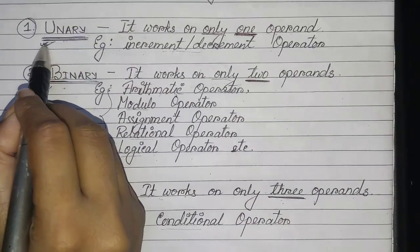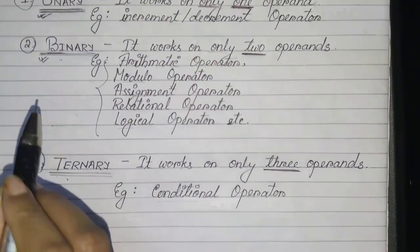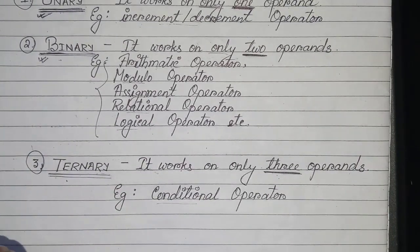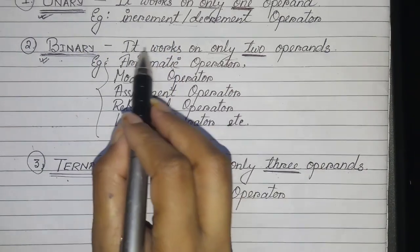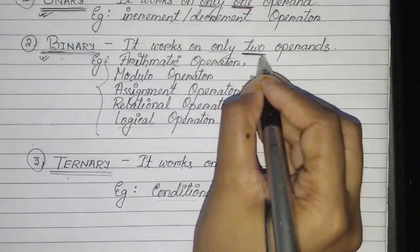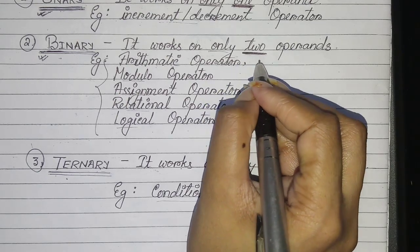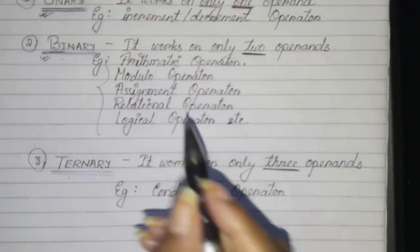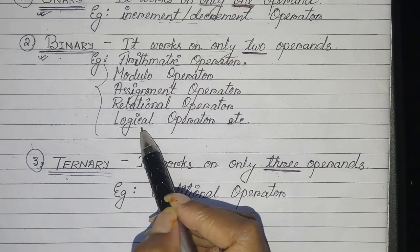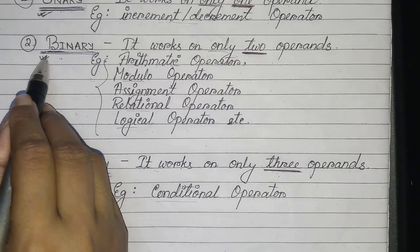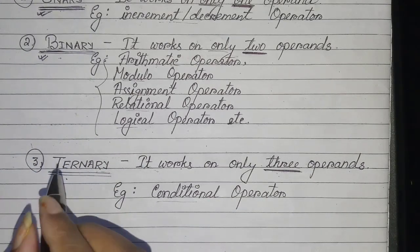Now coming to binary operator — binary stands for two, so it works on only two operands, not less and not more than two. Arithmetic, modulo, assignment, relational, and logical operators are some examples of binary operators.